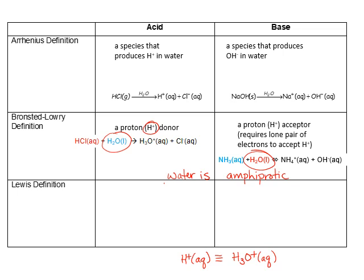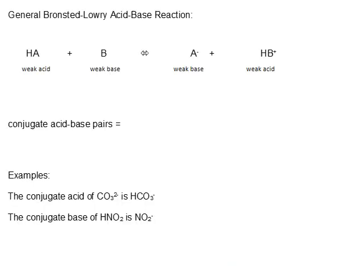Finally, we have our Lewis definition. In the Lewis definition, an acid is an electron pair acceptor, and a base is an electron pair donor. We will talk more about the Lewis definition of acids and bases when we get to coordination compounds. We will mainly be using the Bronsted-Lowry definition of acids and bases in this chapter.